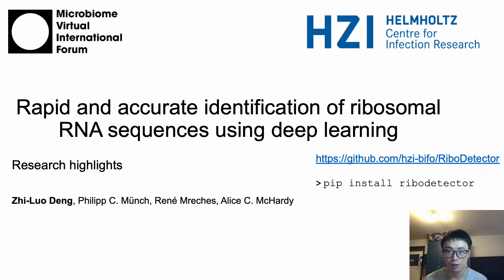Here we describe RiboDetector, a novel software based on a bi-LSTM neural network, which rapidly and accurately identifies ribosomal RNA reads from sequencing data.